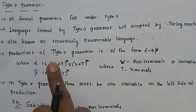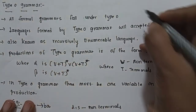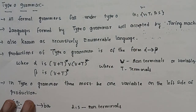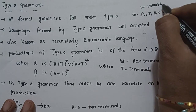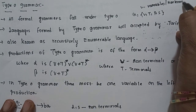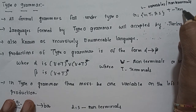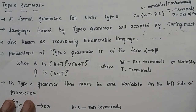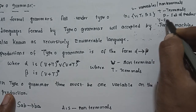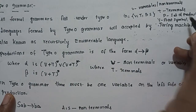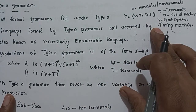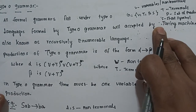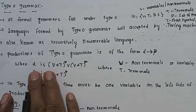In type 0 grammar, a grammar is defined as the set (V, T, P, S), where V is the set of variables or non-terminals, T is the set of terminals, P is the set of productions, and S is the starting symbol. So a grammar contains four tuples.